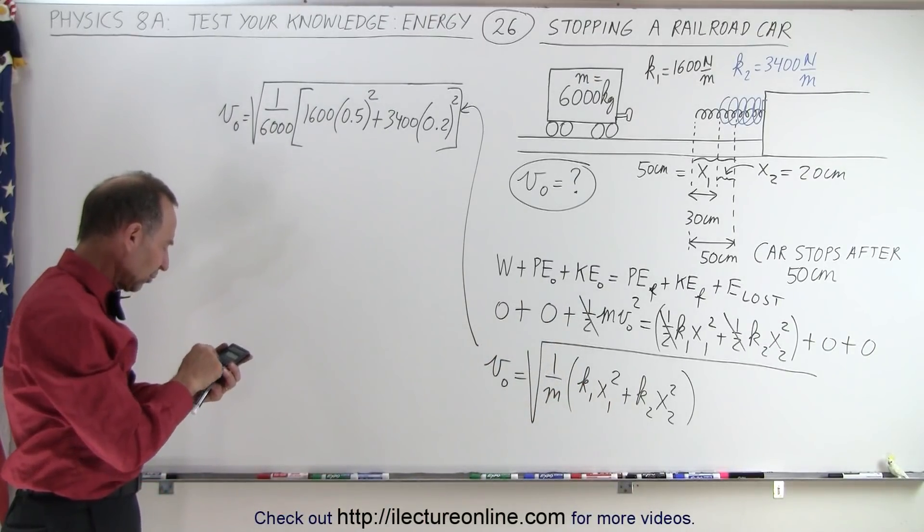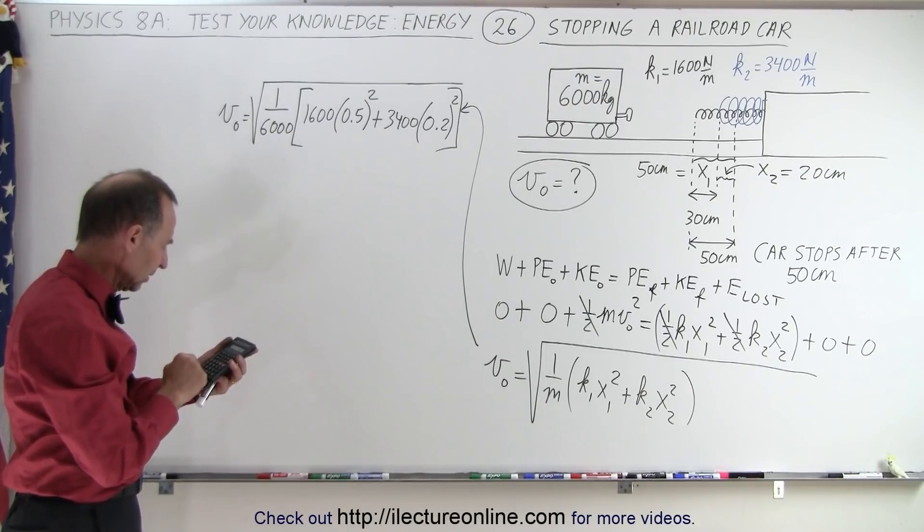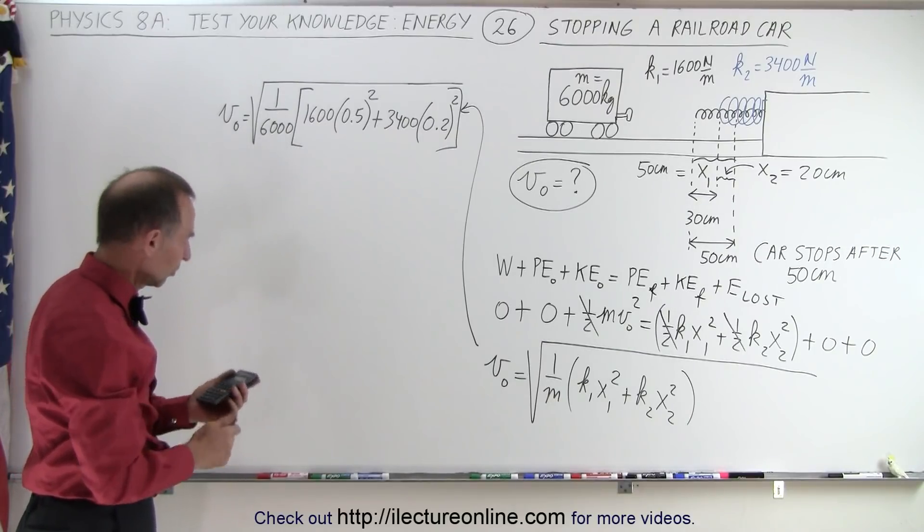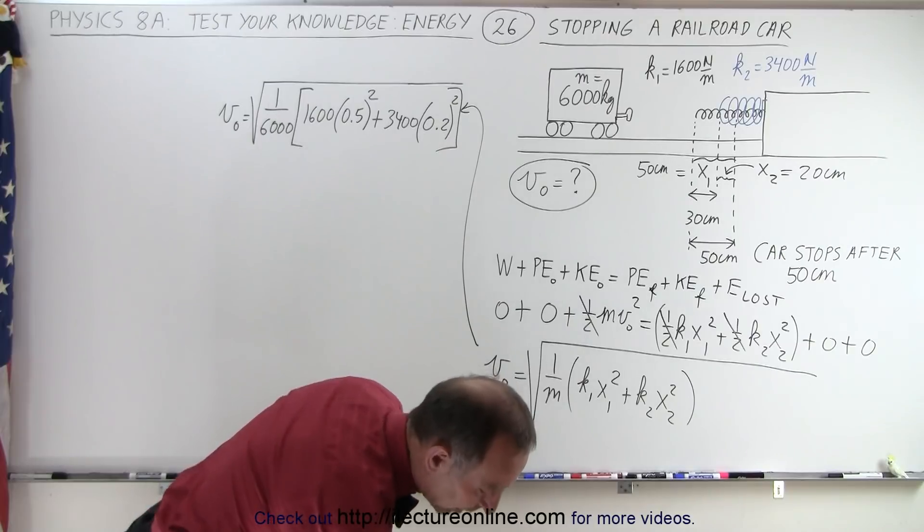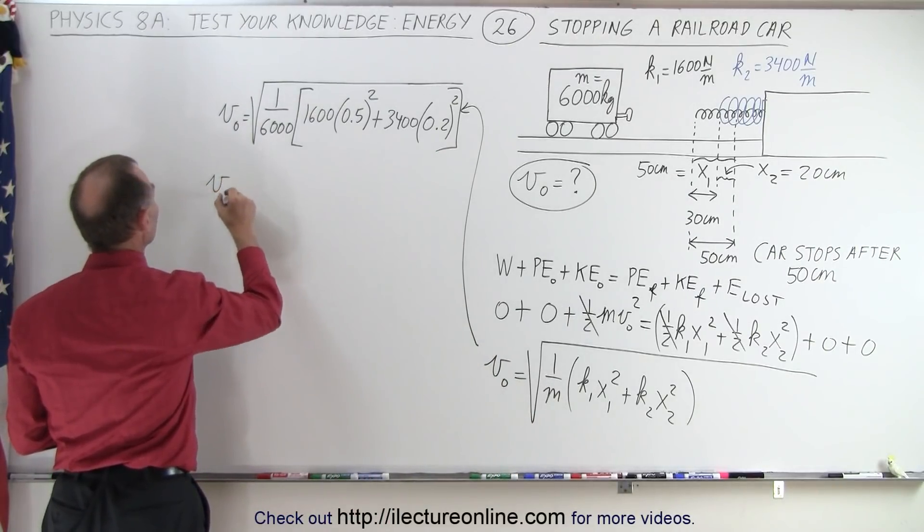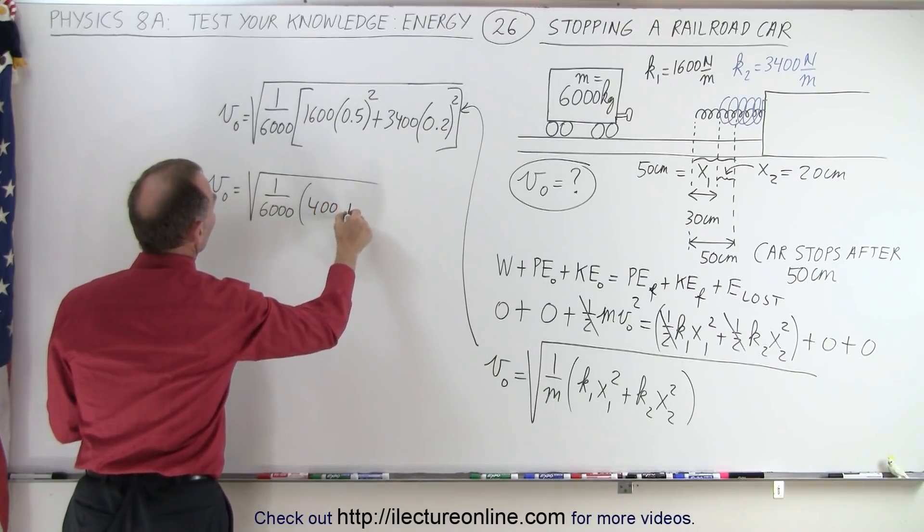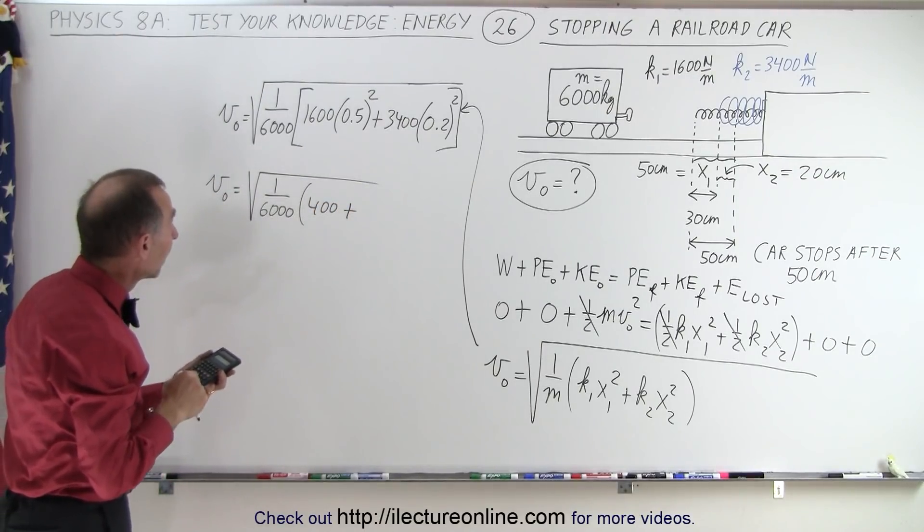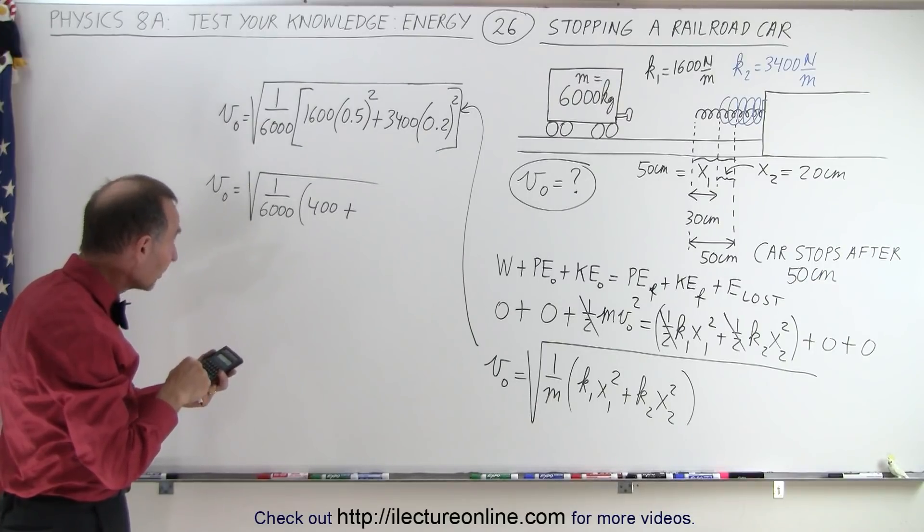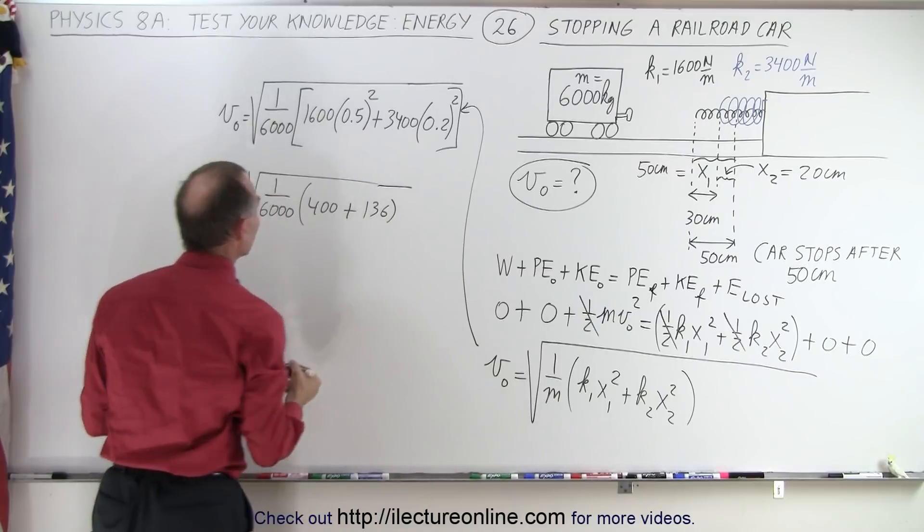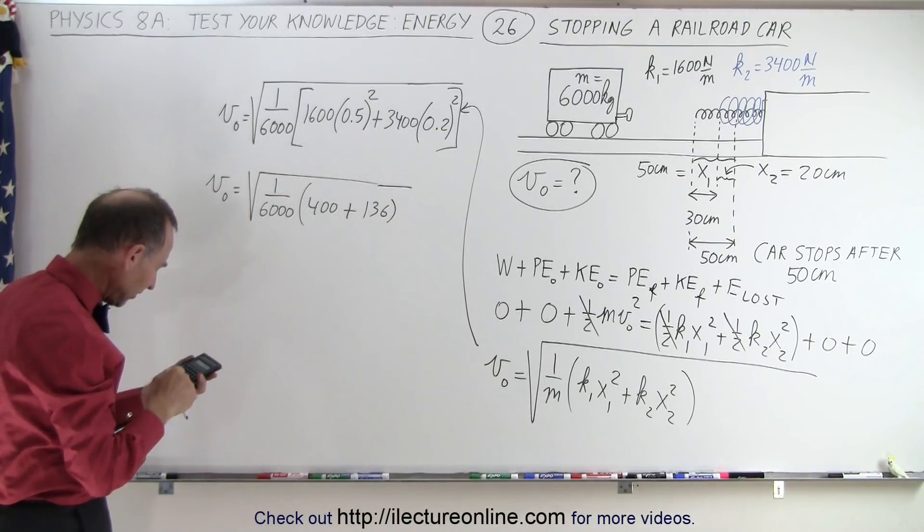So 0.5 squared times 1600, that is 400. All right, so let's put in some intermediate values; sometimes that helps when we mess up on our calculations. So v initial is equal to the square root of 1 over 6000 times 400 plus 0.2 squared times 3400, that would be 136.